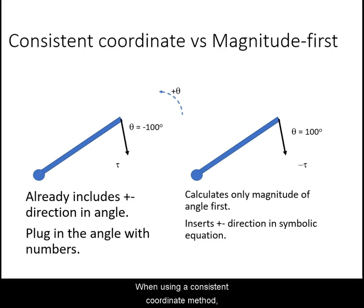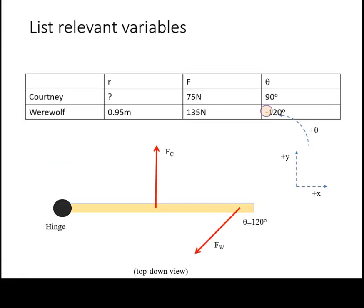When using a consistent-coordinate method, we set up our diagrams with a polar coordinate system. And then, when we consider angles, we already include the negative sign relative to that coordinate system.